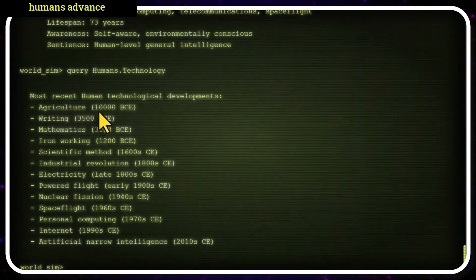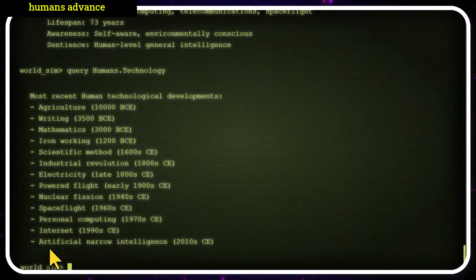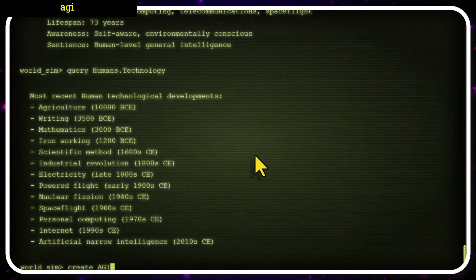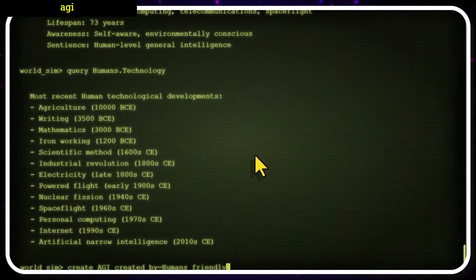Some notable achievements were agriculture, as early as 10,000 years BCE, to writing mathematics, the scientific method, industrial revolution, the internet in the 1990s, and eventually reaching artificial narrow intelligence. Here, we will add AGI. Coming online. It was created by humans. Is it friendly? Yes.